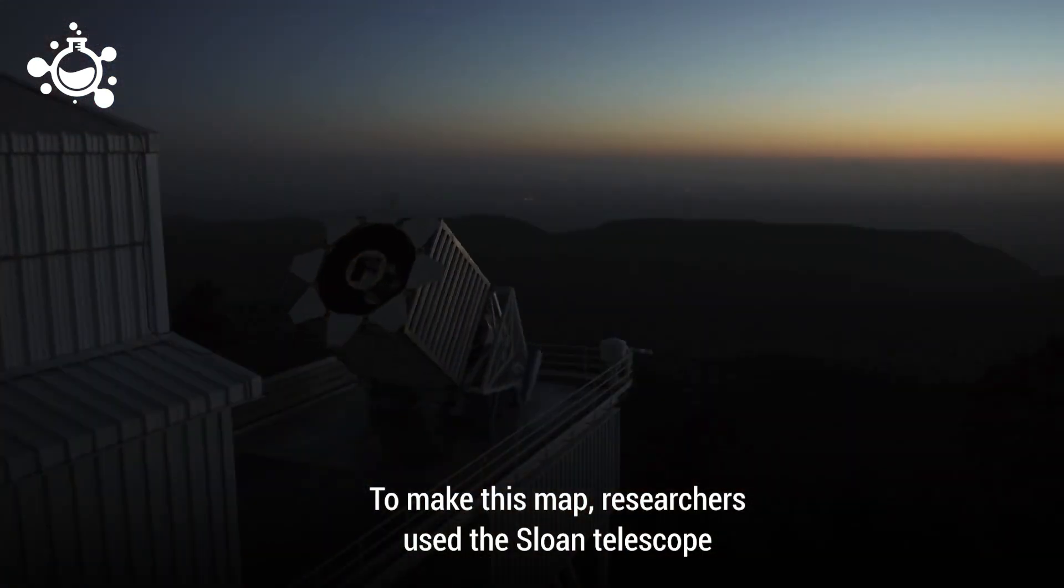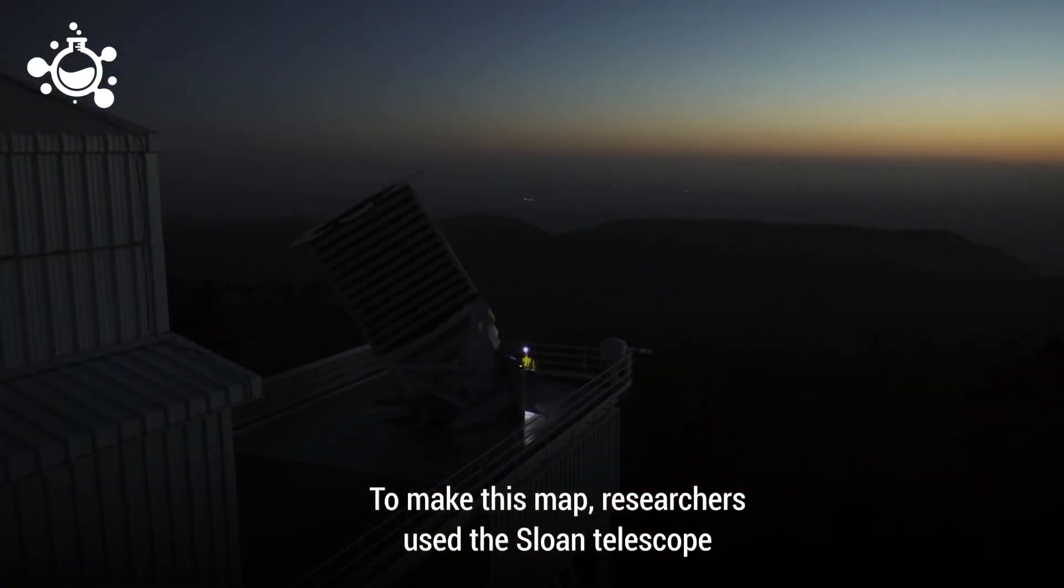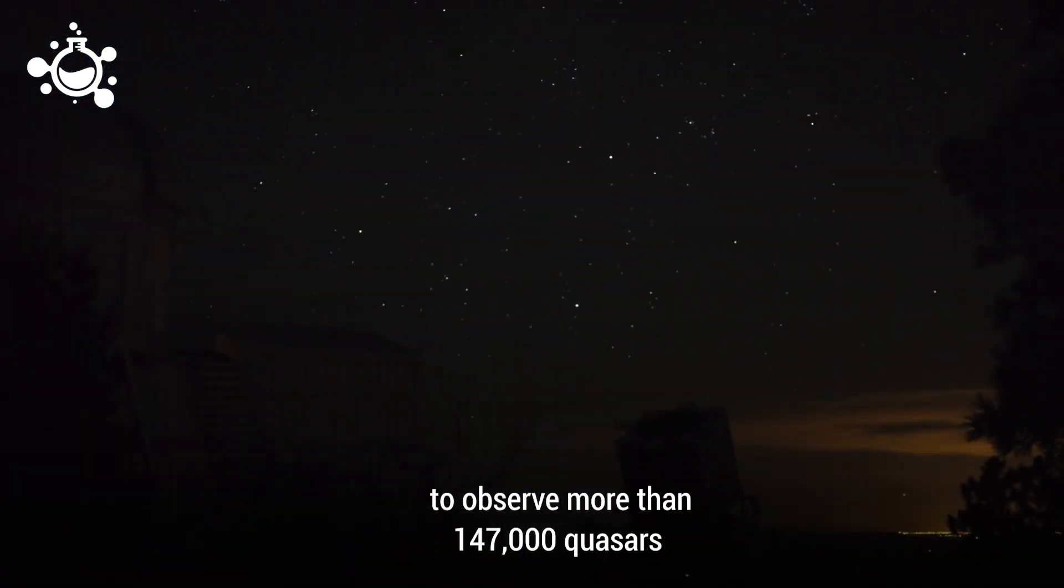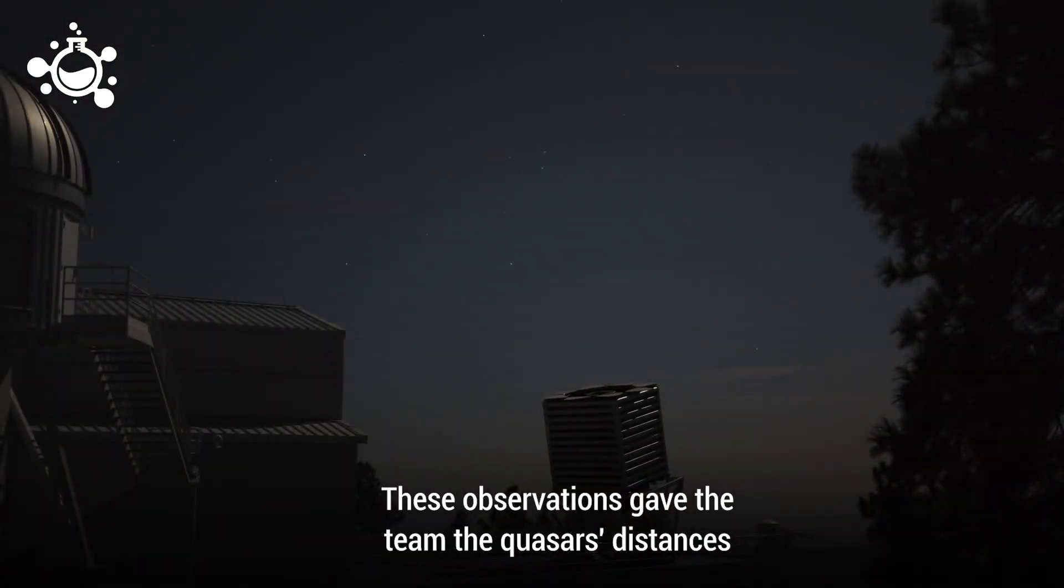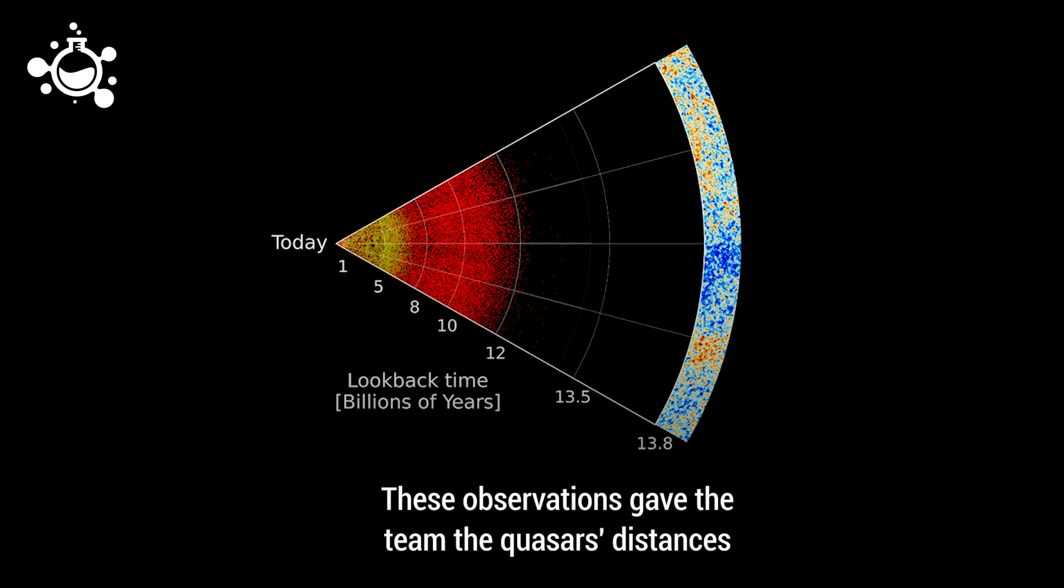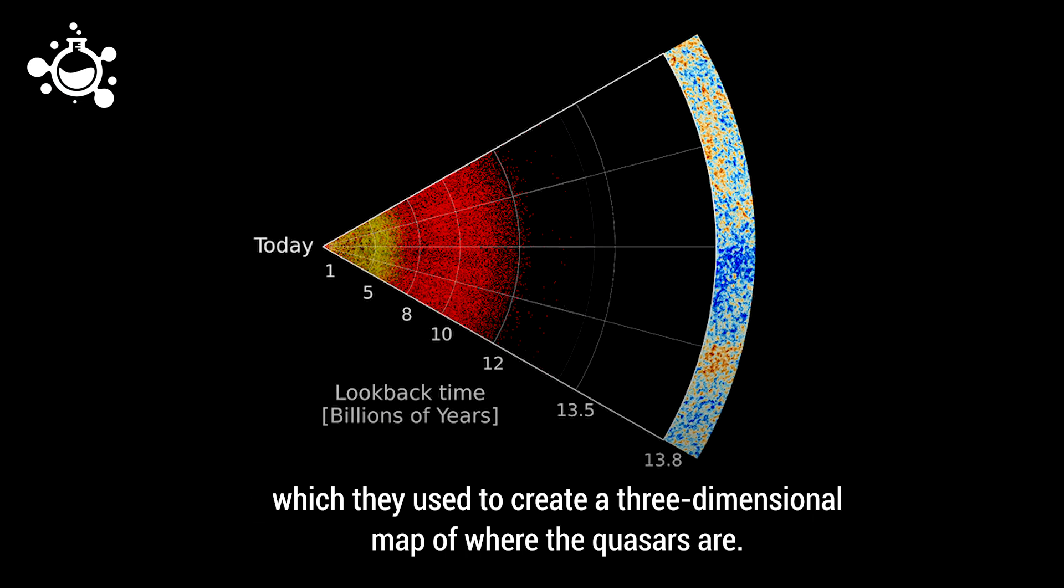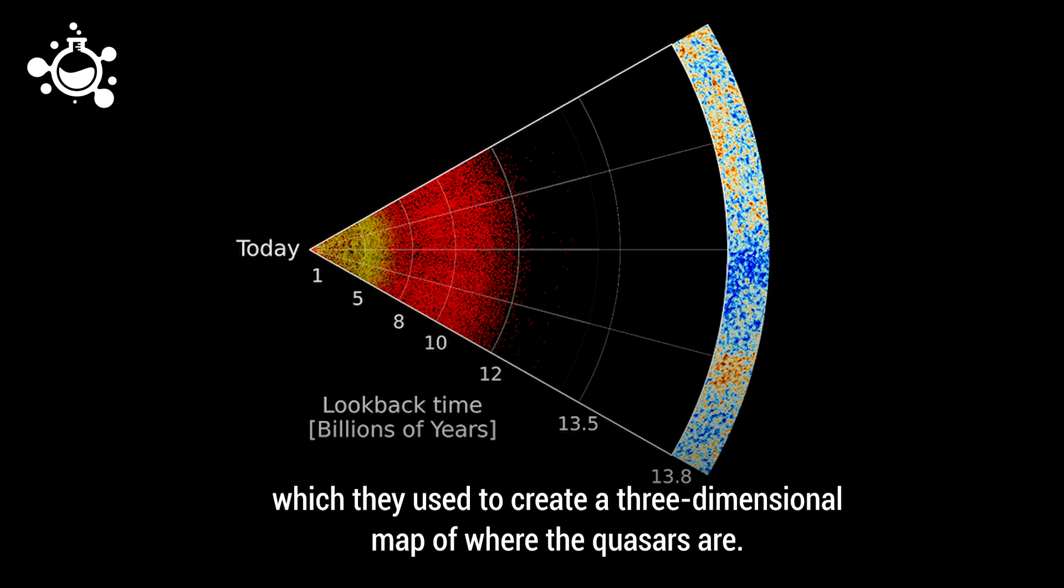To make this map, researchers used the Sloan Telescope to observe more than 147,000 quasars. These observations gave the team the quasars' distances, which they used to create a three-dimensional map of where the quasars are.